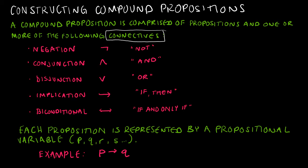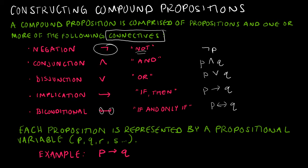We have the negation — I would say 'not P' using that symbol. Conjunction is 'and,' so P and Q. A disjunction is an 'or,' so P or Q. An implication is an 'if then,' so 'if P then Q.' And a biconditional — notice it has an arrow on each end — says 'if and only if,' so P if and only if Q, meaning they both have to share the same truth value. We're using P, Q, R, S, etc. to represent each proposition. Let's get into each of these connectives in further detail.